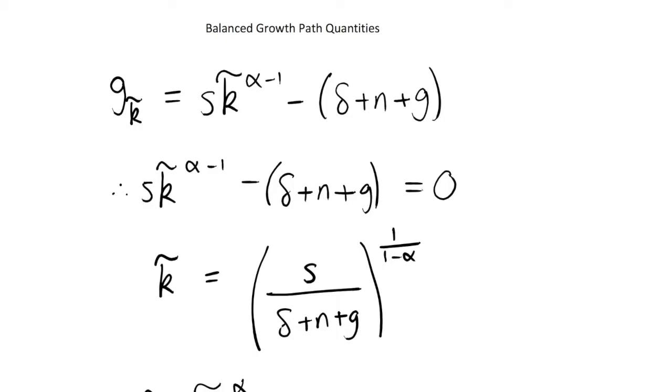In the previous videos we looked at showing that a balanced growth path exists and that we do actually converge to this balanced growth path. Now in this video I'm going to go over how we show the actual quantities or the values of our key variables and what they'll actually be once we're at balanced growth path.